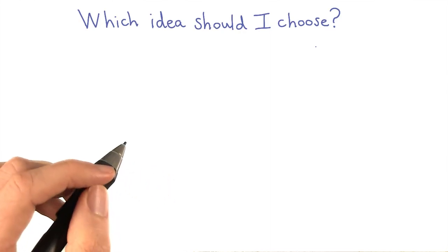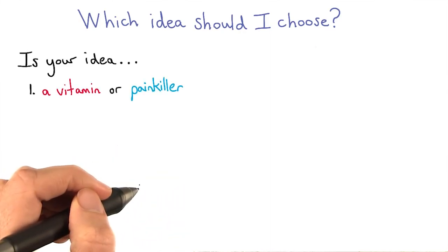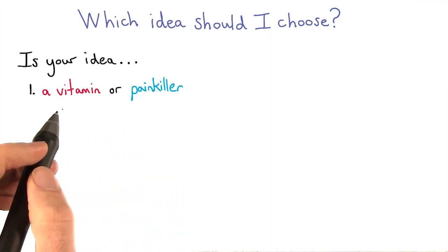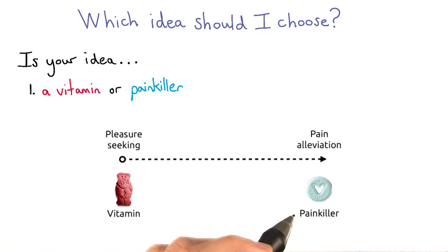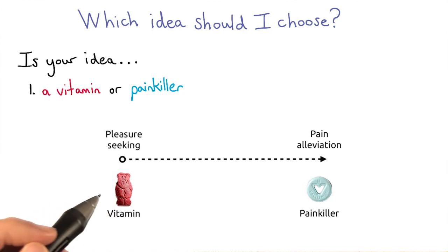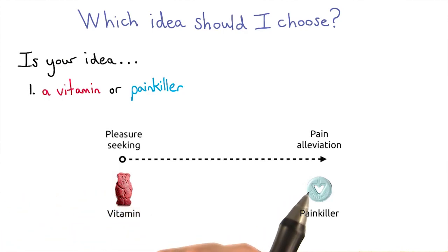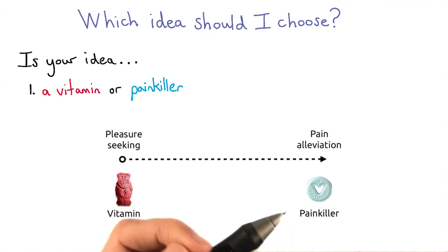Here are some of the considerations you should keep in mind. First, is your idea a painkiller or a vitamin? Painkillers address an obvious and functional need for users, while vitamins address users' emotional needs and are really nice to have. Now, both types, but especially painkillers, can lead to successful companies.